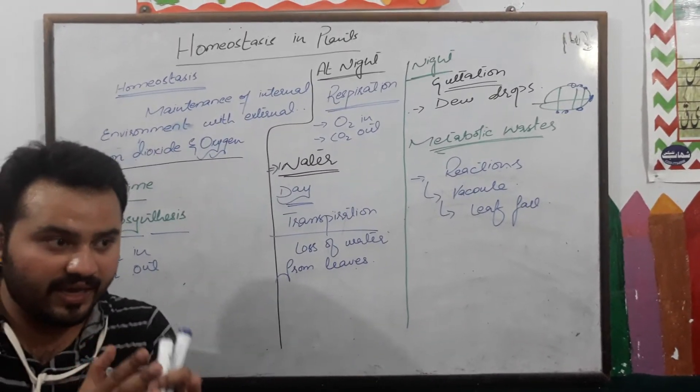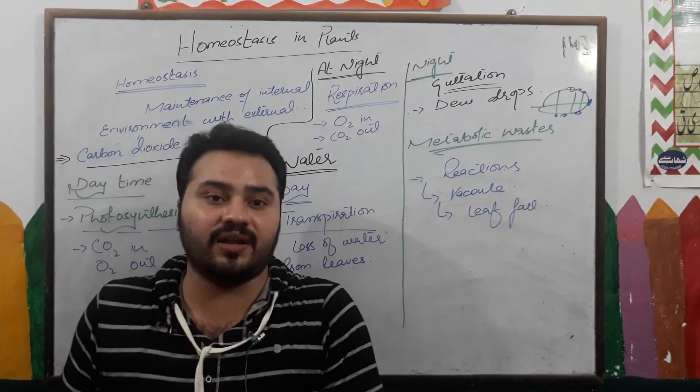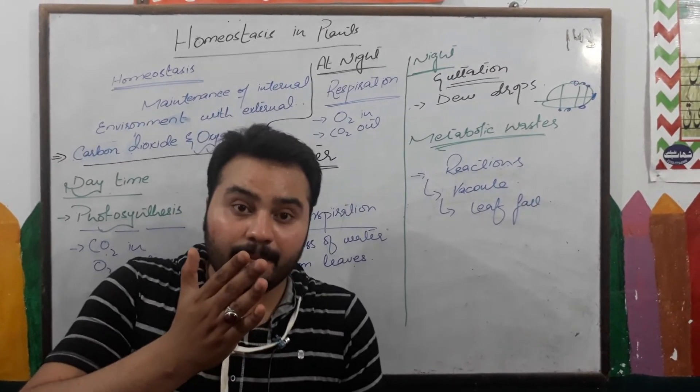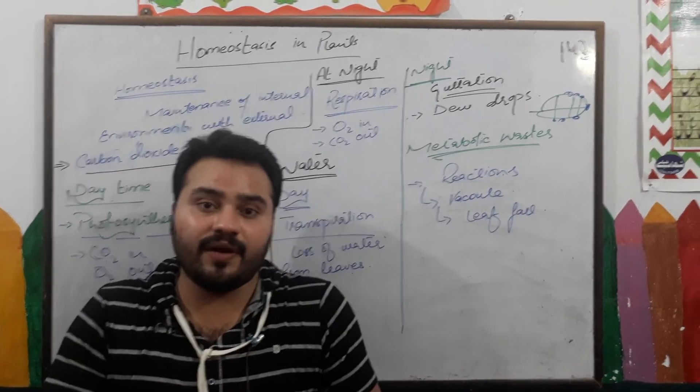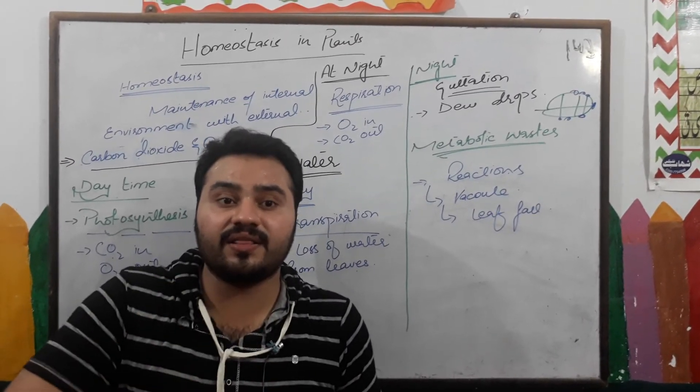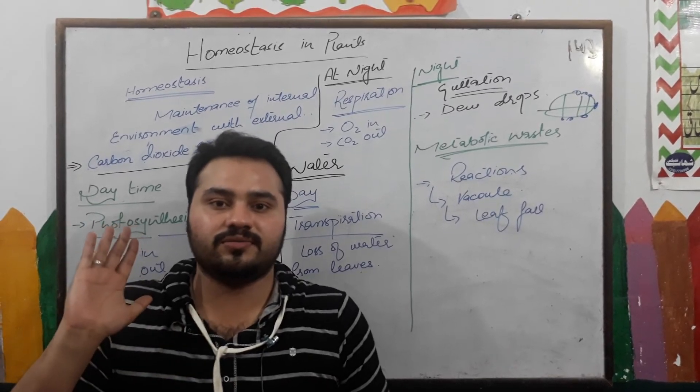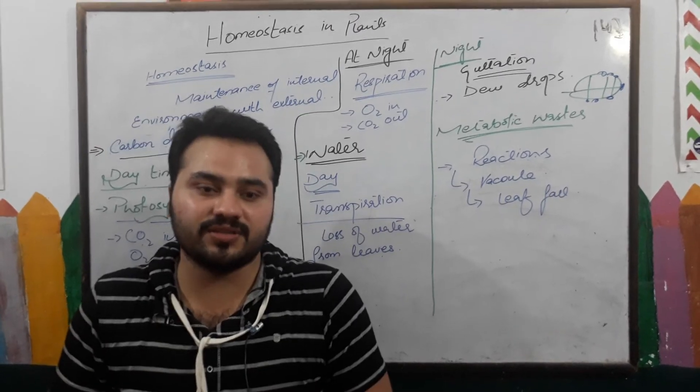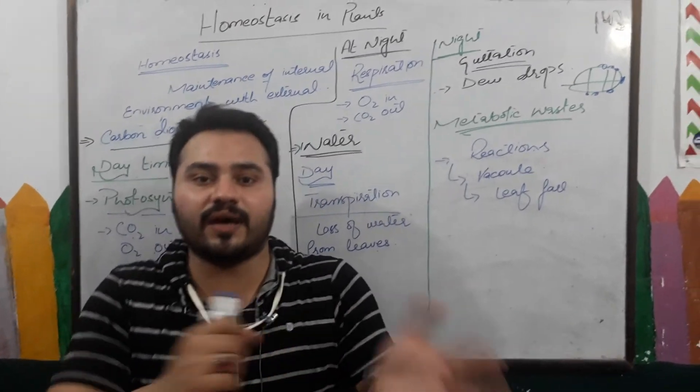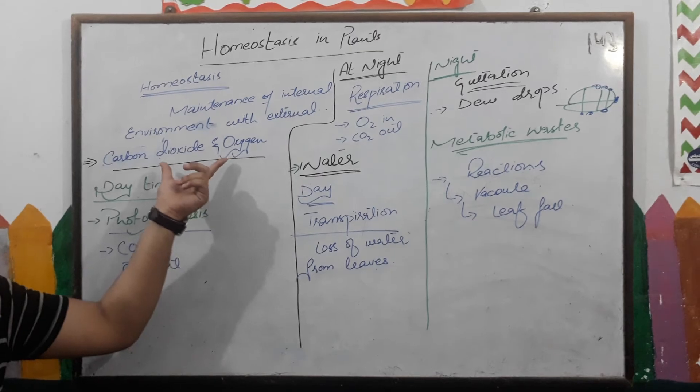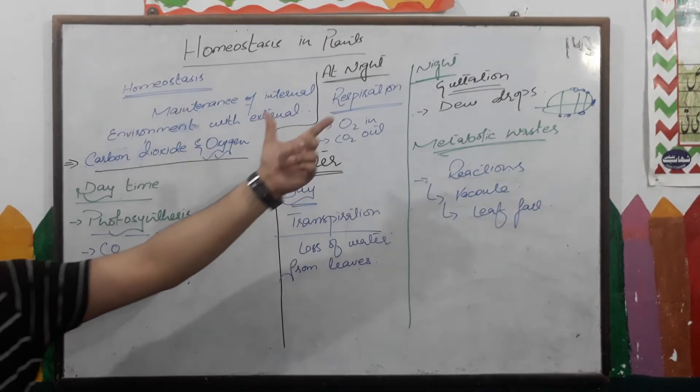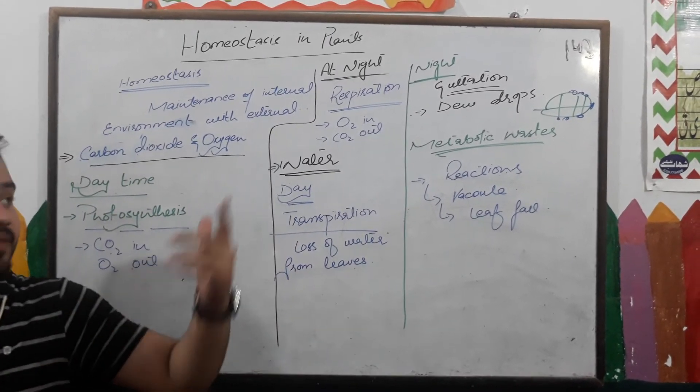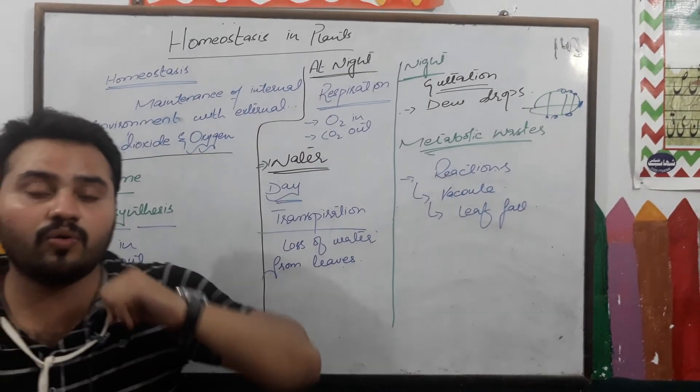This is homeostasis - maintaining the internal environment with the external. But how can it maintain the internal environment? If a substance is present in excess inside the body, expel it out, remove it from the body. This is homeostasis - maintaining internal environment with external environment. With these steps - carbon dioxide, oxygen, water, and metabolic waste - plants are doing homeostasis with these three phenomena throughout their whole life.